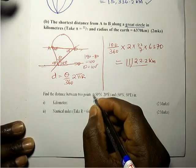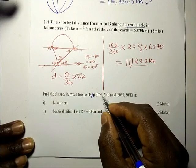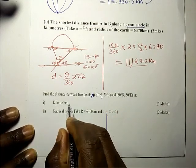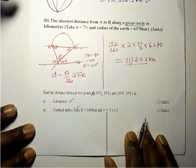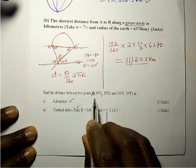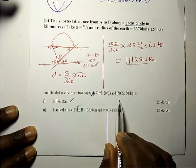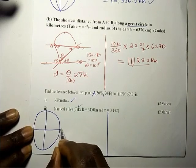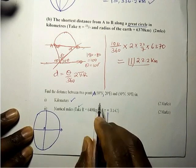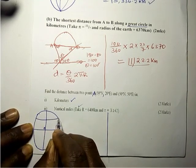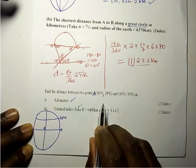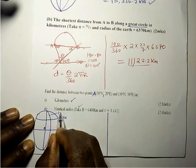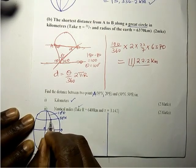Find the distance between two points: A is at 50 degrees north, 20 degrees east, and B is at 50 degrees north, 50 degrees east — in kilometers and then in nautical miles. Let us first check whether this is a great circle or a small circle, and let us sketch first. This is the equator and the prime meridian. A is on 50 north so that is somewhere here, and 20 east is somewhere here — so this is point A.